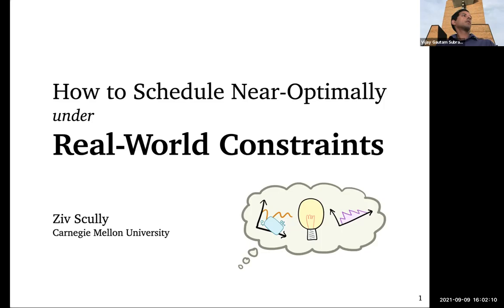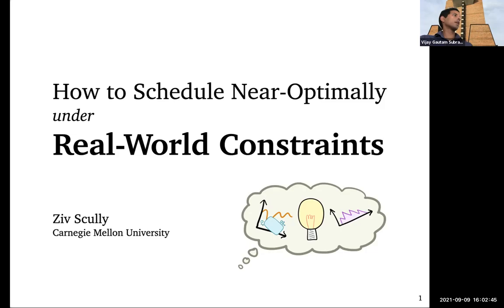Today's speaker is Ziv Scully from Carnegie Mellon University. He's a graduate student in computer science at CMU, advised by Moore Harcourt-Barter and Guy Lelock. Ziv is finishing very soon and should be on the market. He graduated from MIT in 2016 with a BS in mathematics and computer science, recipient of the NSF graduate fellowship and ARCS foundation scholarship.